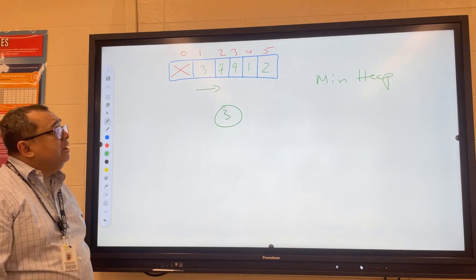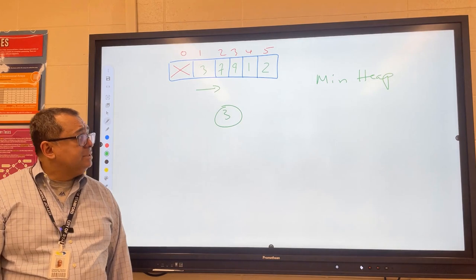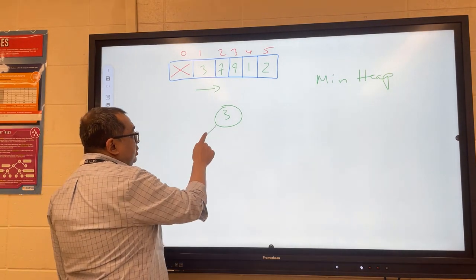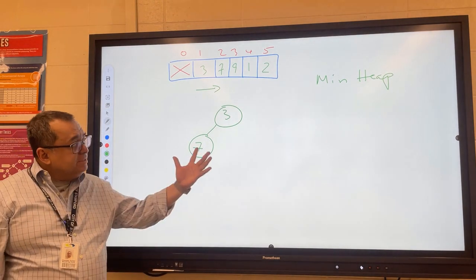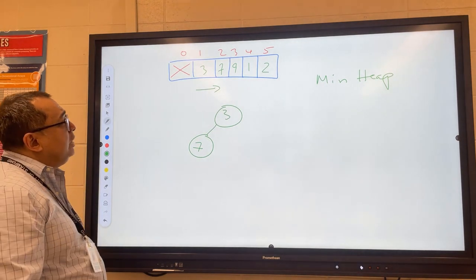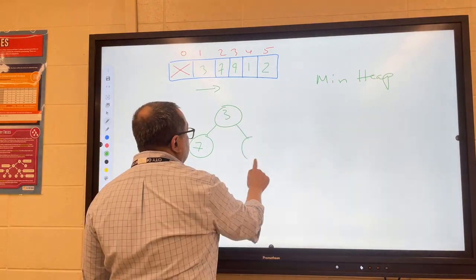Now what's the next number we're going to insert, Mr. Nikita? Seven. So where should I insert the seven? I'm going to insert it here and now I ask the question, is this a min heap? It is, so we're still good. Now we're going to insert the nine. Where should I insert the nine, Mr. Leska? Do I need to do any swapping at this point? Okay.